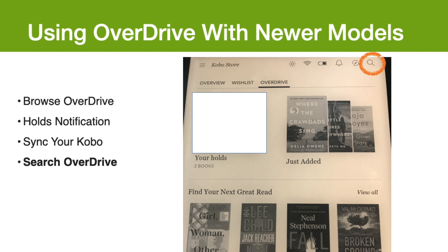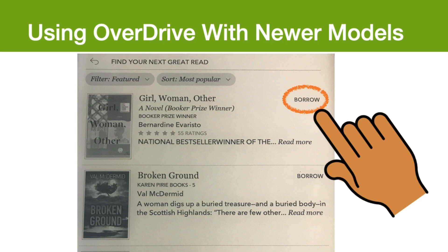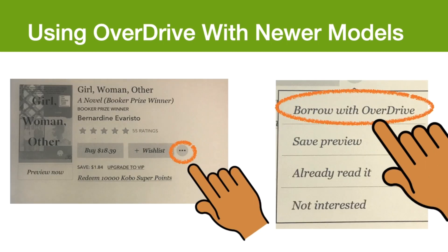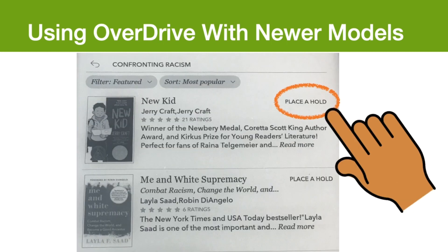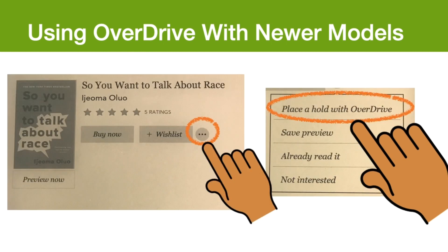Using the search button in the top right corner, you can search titles available on Overdrive. To borrow available titles, click Borrow to the right of the title. Or click on the three small dots beside Wishlist, then click Borrow with Overdrive. To put titles on hold, click Place a Hold. Or similarly, click the three dots beside Wishlist and click Place a Hold with Overdrive.